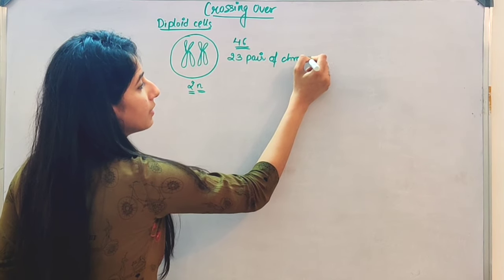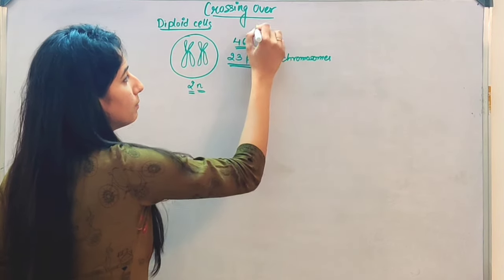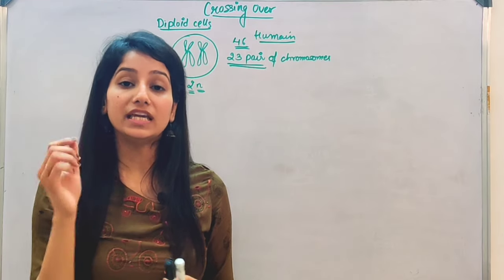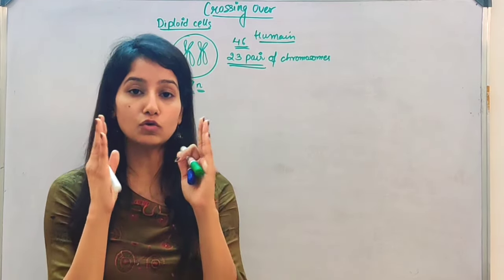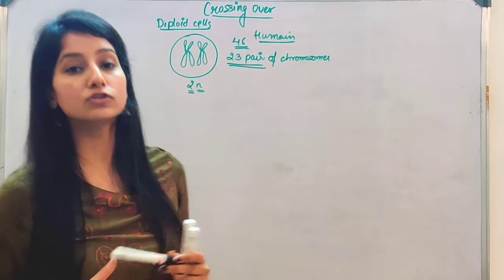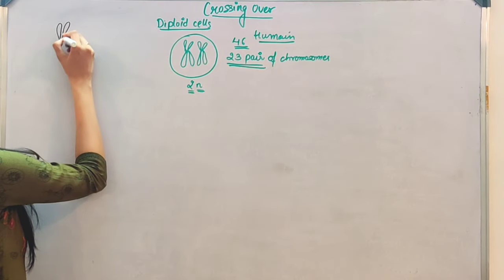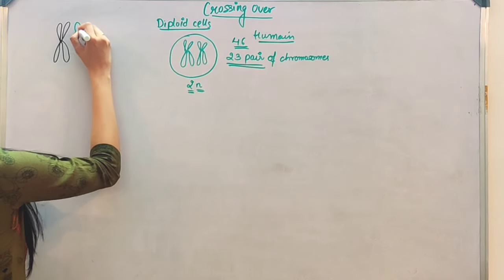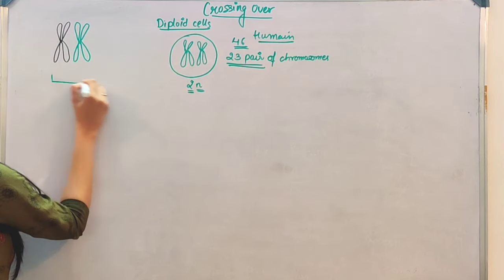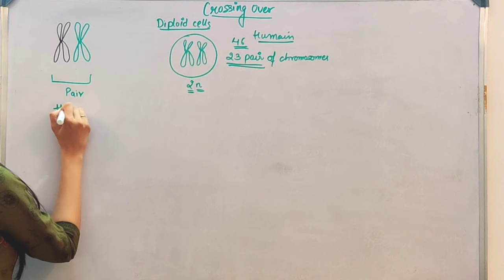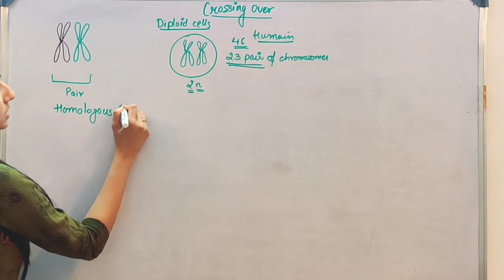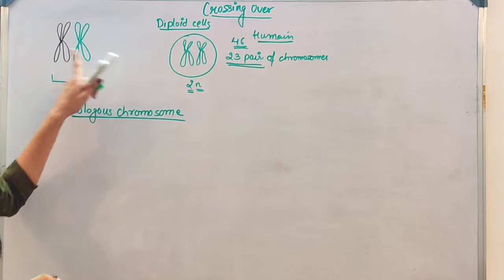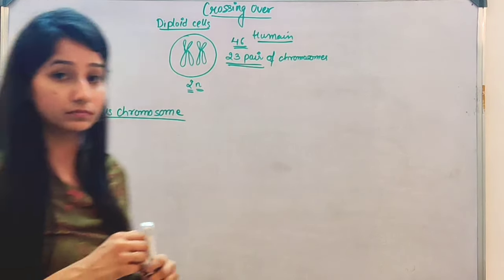If we see 23 pairs of chromosomes, that means every chromosome has its pair. Each chromosome has its pair. The two chromosomes that are paired are known as homologous chromosomes. Like this one chromosome and the other chromosome — both are a pair. This is known as homologous chromosome. These will be similar, as they are copies of each other.